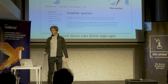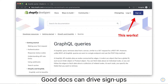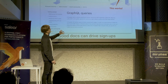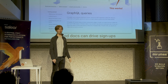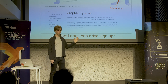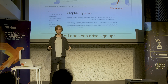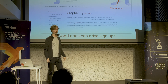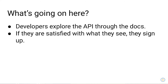Good docs can also help you drive signups. If you're looking for new users for your API and you have a really nice, clear documentation site, and you put a little signup button up there, I can tell you that this works — it actually drives signups for companies like Shopify and others. People come in, look around, and they're like, this is pretty much what they need, I feel comfortable with this, so they go ahead and sign up for your product. Developers just explore the API, and once they're ready, they sign up.